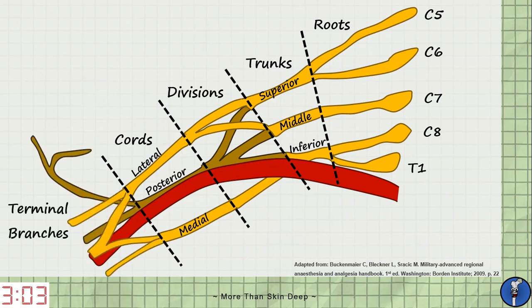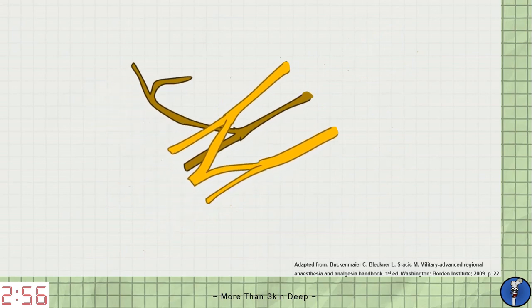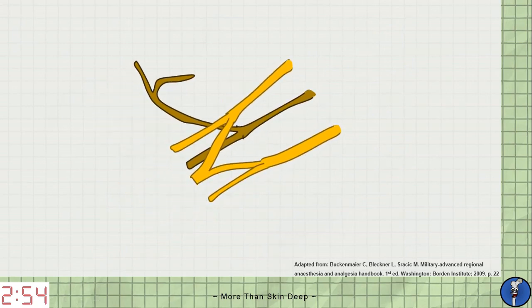Finally, the cords give rise to several terminal branches which go on to do most of the work in the arm and forearm. Let's take a closer look at these terminal branches. We have five in total, each carrying out a major role downstream.